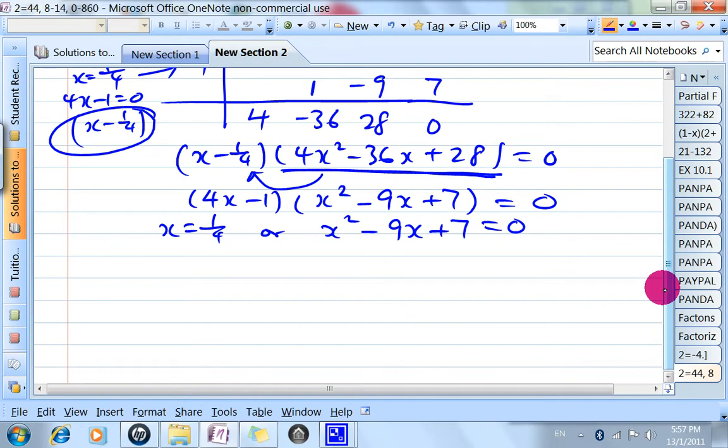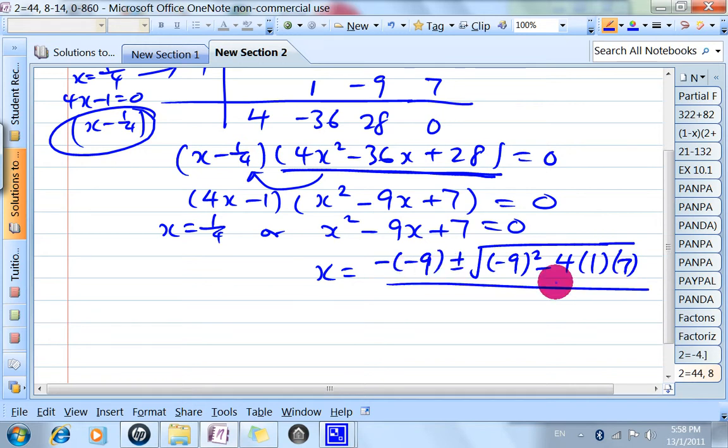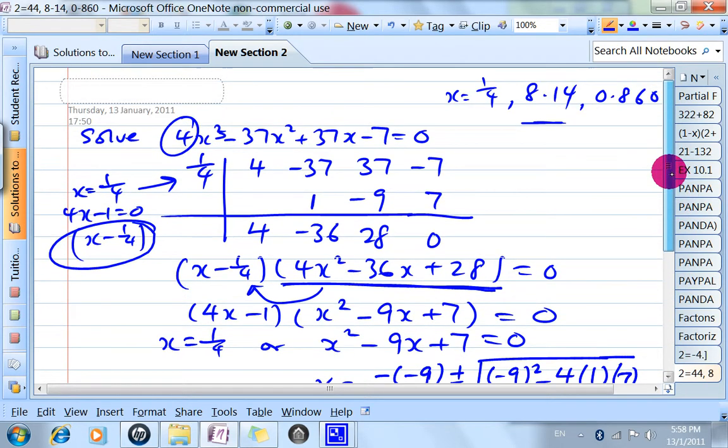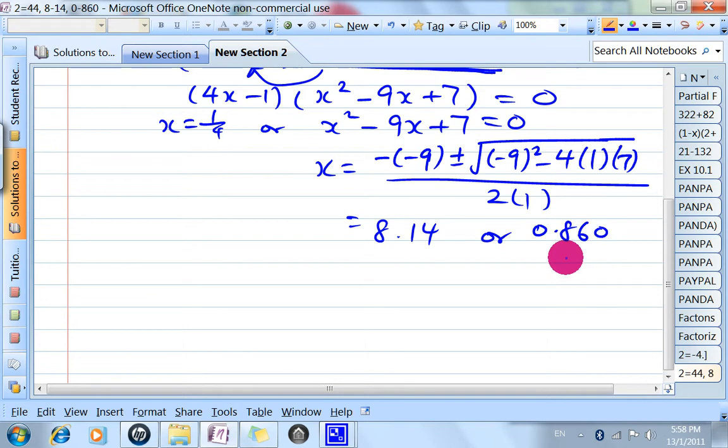This one must use the quadratic formula: x = (-b ± √(b² - 4ac)) / 2a. Using the calculator, the solutions will be 8.14 or 0.860 to 3 significant figures.